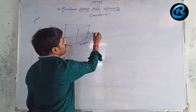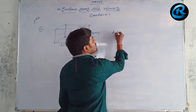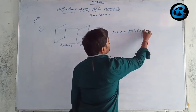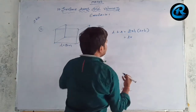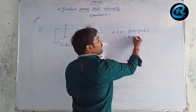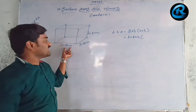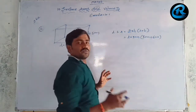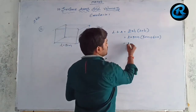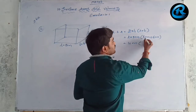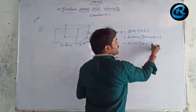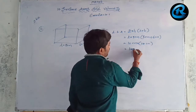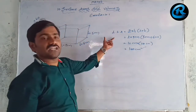Lateral surface area of a cuboid = 2h(l + b). So 2 × 5 × (8 + 6) = 2 × 5 × 14. That gives 10 × 14 = 140 cm². This is the lateral surface area of the cuboid.